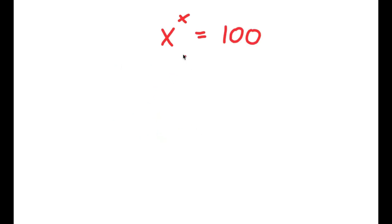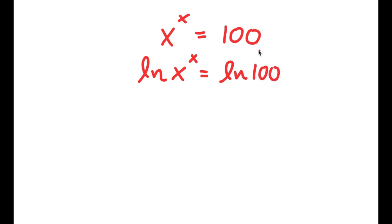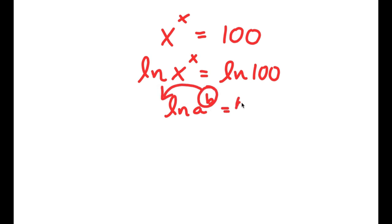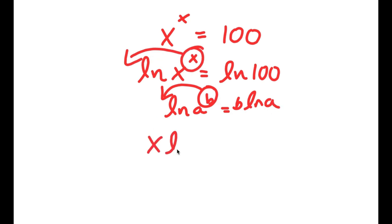So in this problem, I have x to the power of x is equal to 100. I'm going to first start by taking the natural log on both sides. So I have ln of x to the power of x is equal to ln 100. If I have something in the form ln of a to the power of b, I can move b to the front. So for ln of x to the power of x, I can move x to the front and get x times ln x is equal to ln 100.